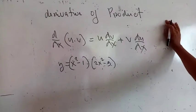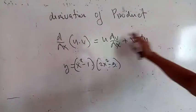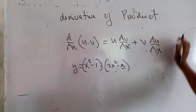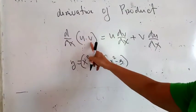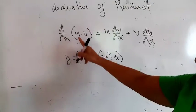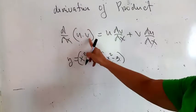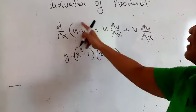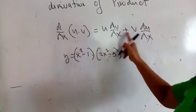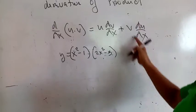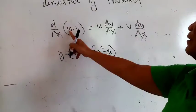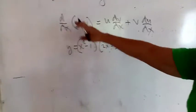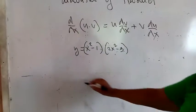The next formula we'll discuss is the derivative of a product. A product is multiplication: u times v. When you differentiate u times v, the derivative of u times v will be: the first is u, differentiate the second, dv/dx, plus the second is v, times the derivative of the first term, du/dx.